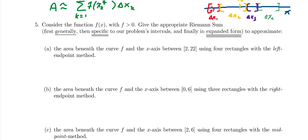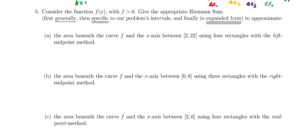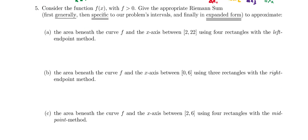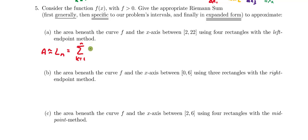Now let's say we have some positive function f and I'm going to practice writing out the Riemann sums a few different ways. The first thing I'm going to do is approximate the area between the curve and the x-axis. In this case we're told to use four rectangles with the left endpoint method. I'll call it L sub n, and I'll set up the left Riemann sum abstractly — copying the expression from question number four.